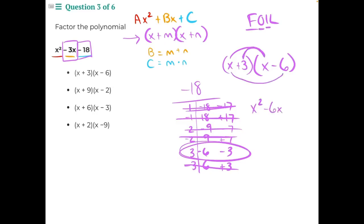Then the inner side, positive 3 times x would give us positive 3x. And then finally the last numbers multiplied together, 3 times negative 6 would give us negative 18.